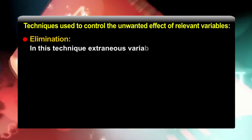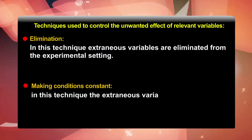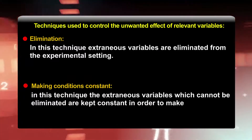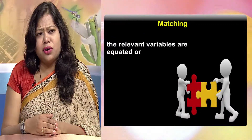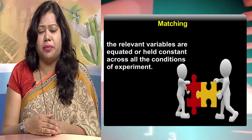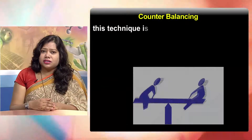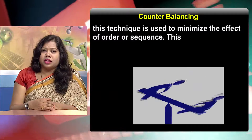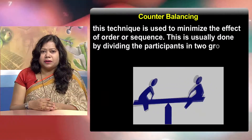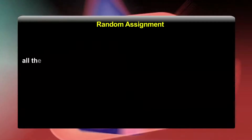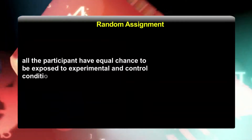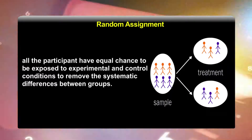Variables play a very important role, but the following techniques are used to control the unwanted effect of relevant variables. Number one, elimination — extraneous variables are eliminated from the experimental setting. Number two, making conditions constant — extraneous variables which cannot be eliminated are kept constant to make their effect the same during the entire experiment. Number three, matching — relevant variables are equated or held constant across all conditions of the experiment. Number four, counterbalancing — this technique is used to minimize the effect of order or sequence, usually done by dividing participants into two groups. Number five, random assignment — all participants have equal chance to be exposed to experimental and control conditions to remove systematic differences between groups.